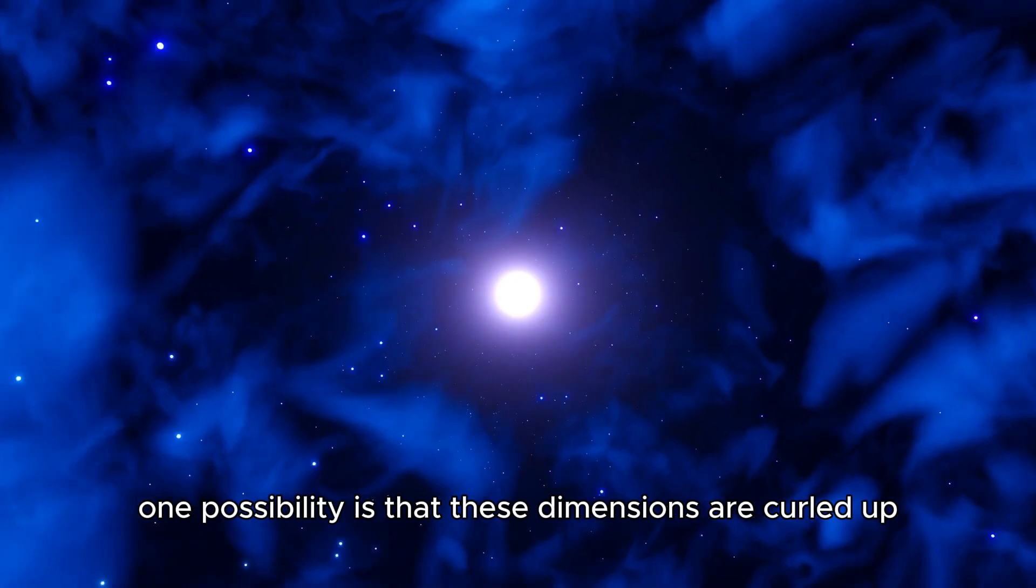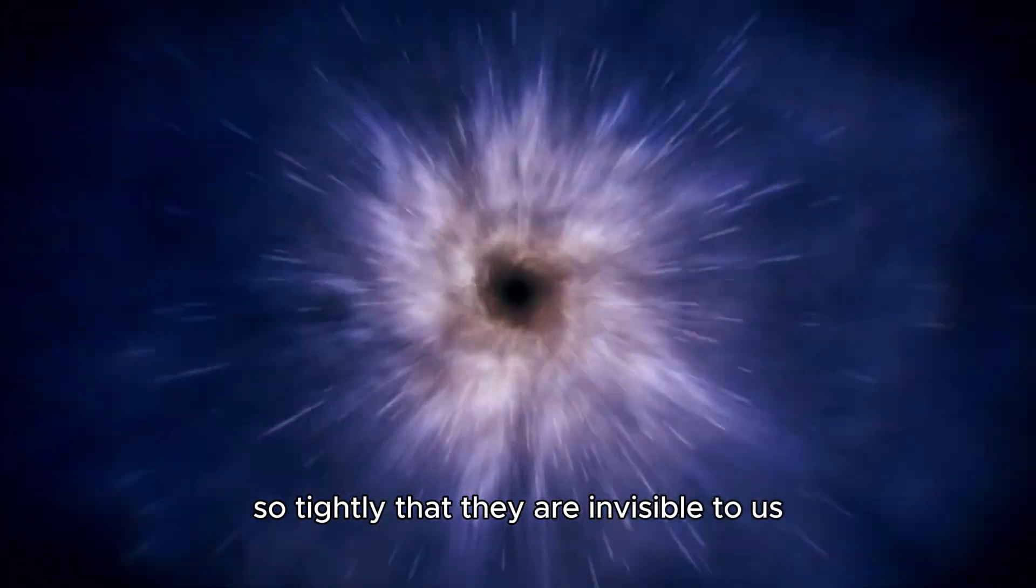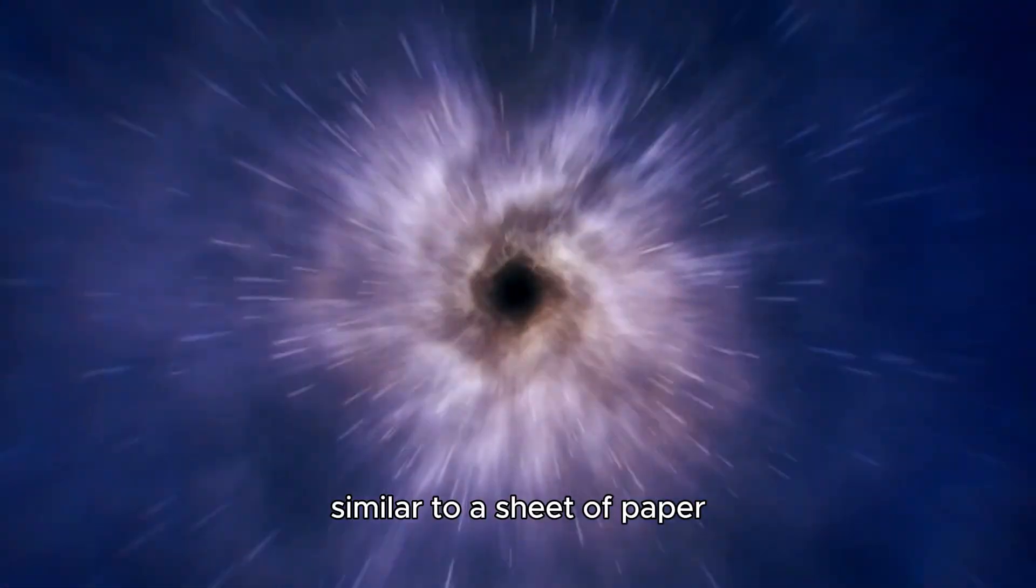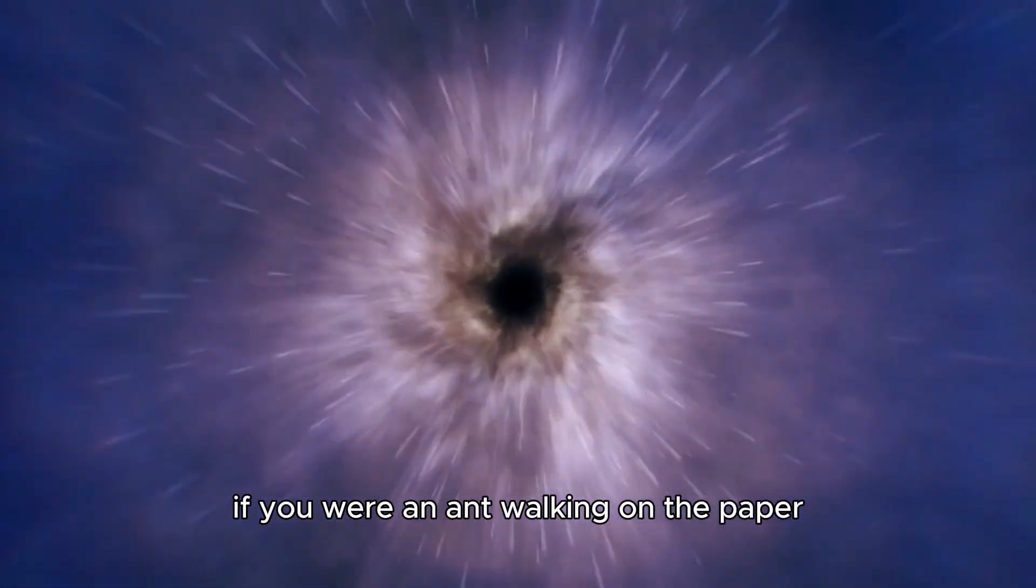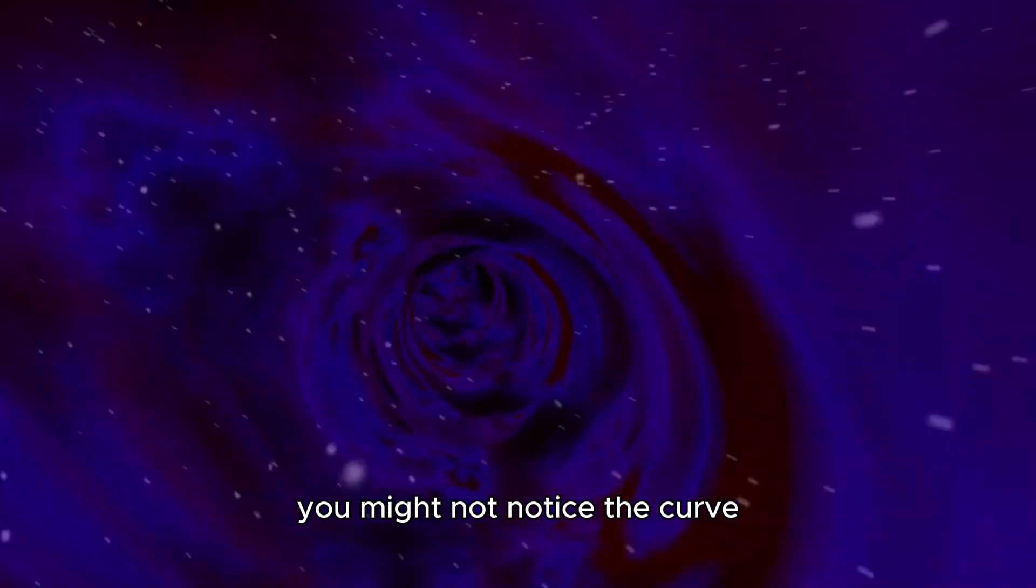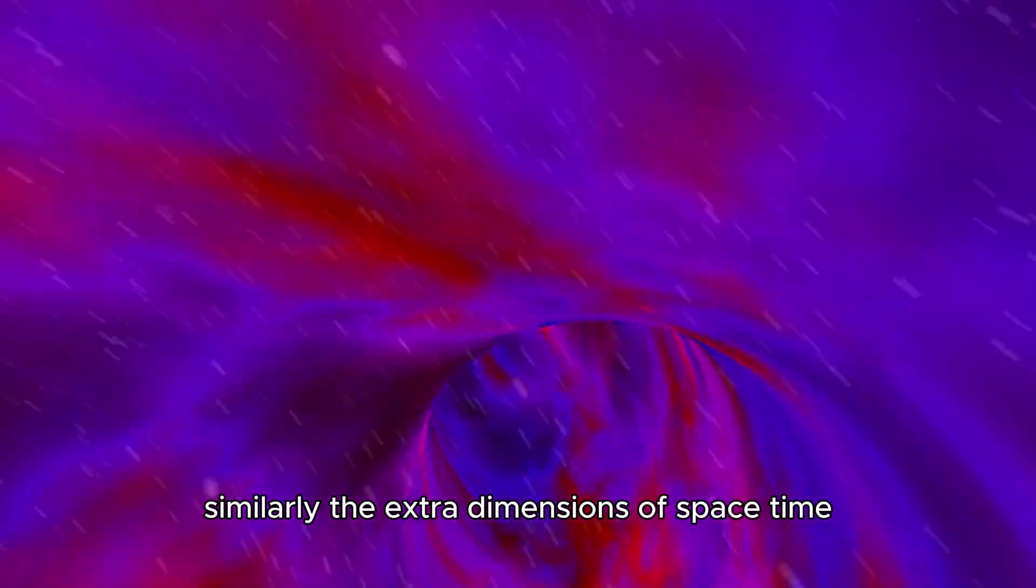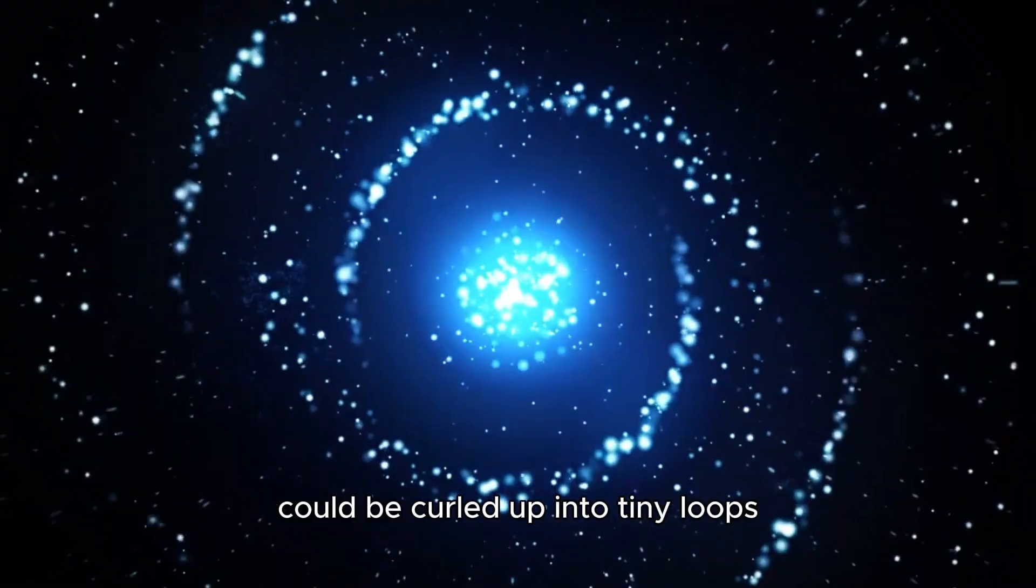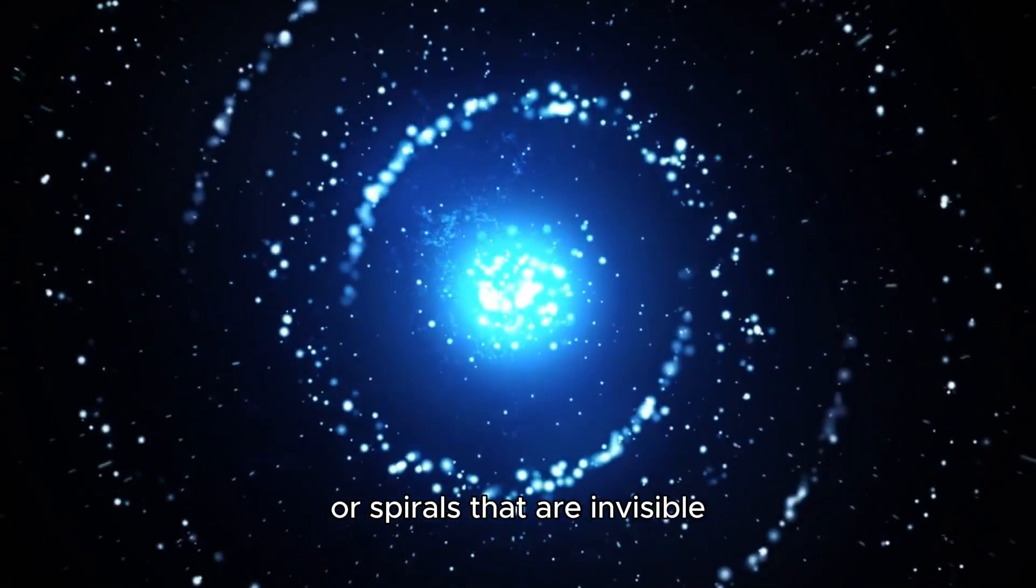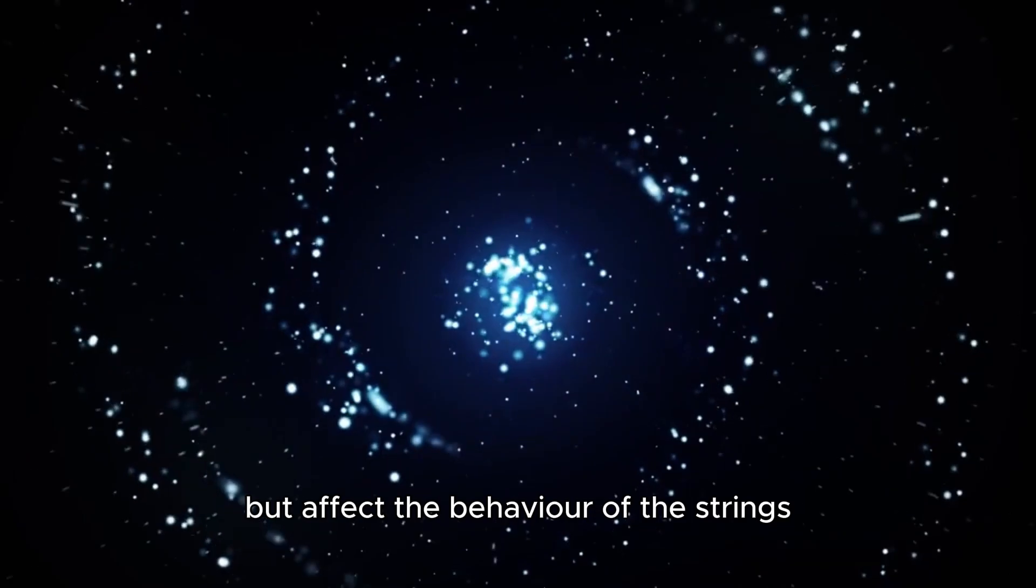One possibility is that these dimensions are curled up so tightly that they are invisible to us, similar to a sheet of paper tightly rolled into a cylinder. If you were an ant walking on the paper, you might not notice the curve. Similarly, the extra dimensions of space-time in superstring theory could be curled up into tiny loops or spirals that are invisible but affect the behavior of the strings vibrating in them.